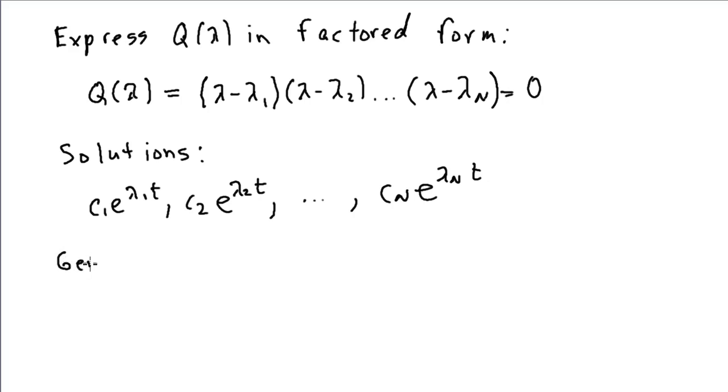My general solution for y0, my zero input solution would be c1 e to the lambda 1 of t plus c2 e to the lambda 2 of t plus cn e to the lambda n of t.